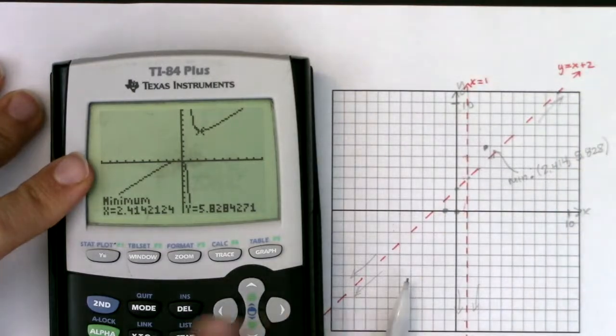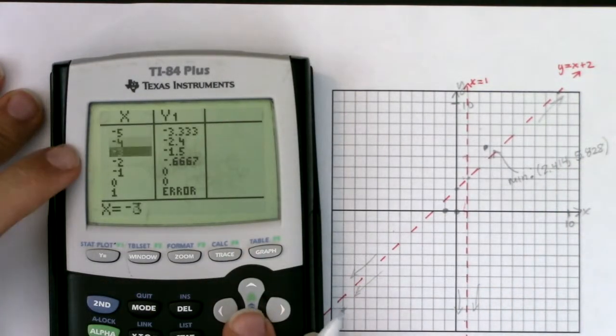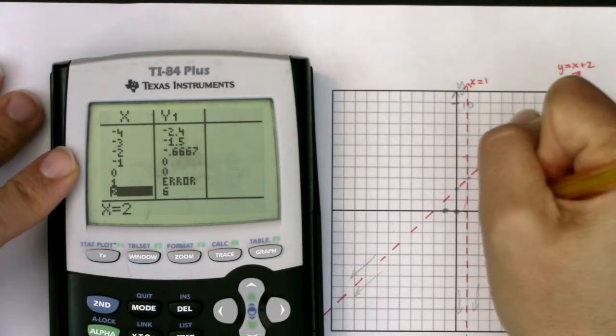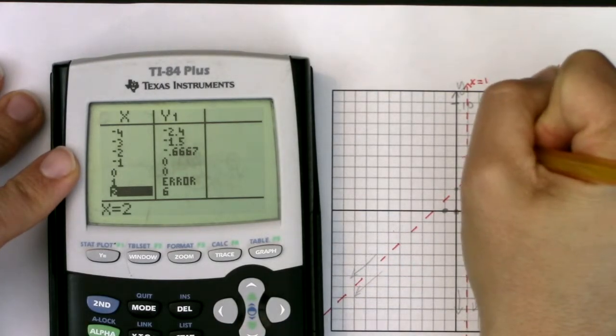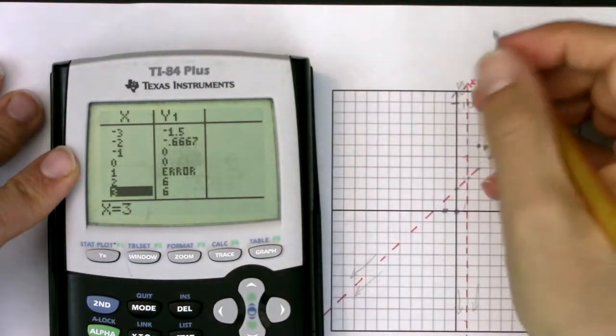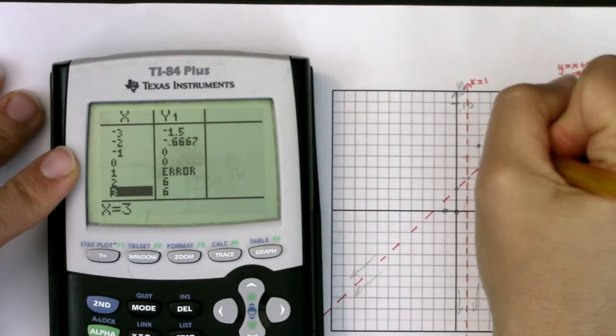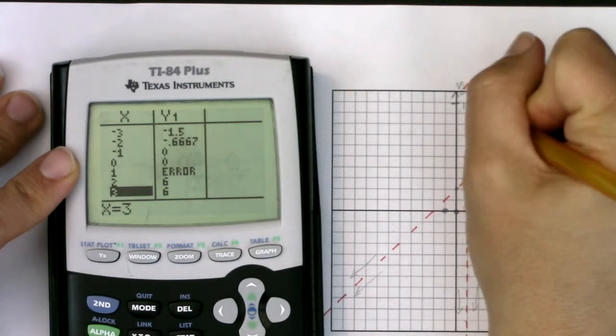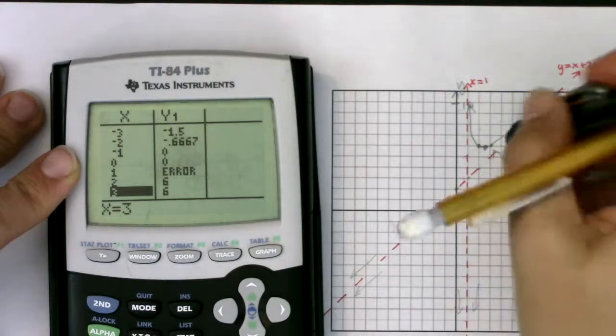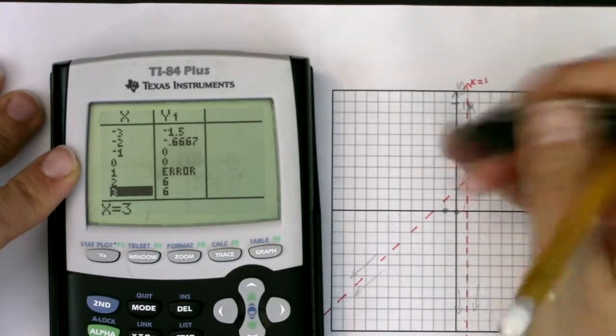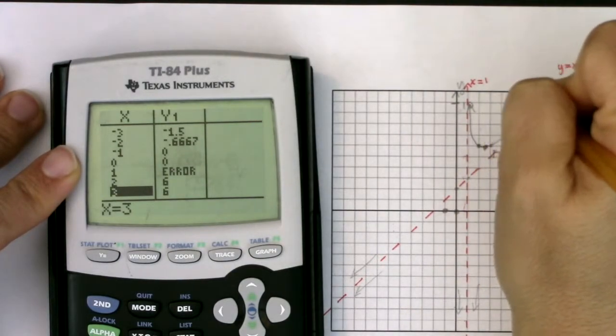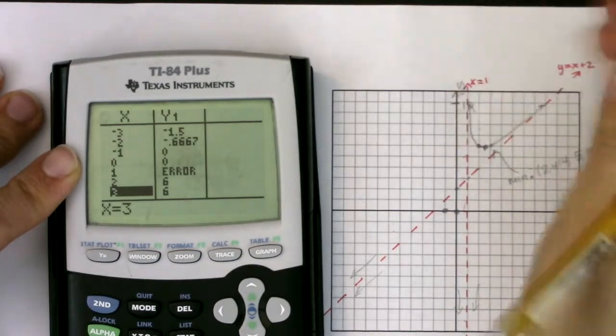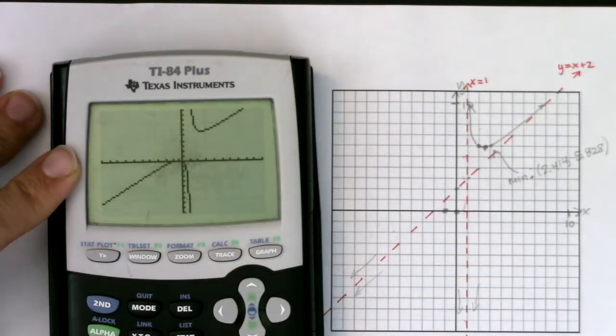So my minimum is 2.414 comma 5.828 okay and then I'm going to fill this in. And if I wanted some other points to help guide me I could head over to these numbers so it looks like I actually have two six and then three six.